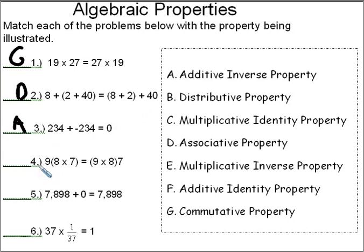For number 4, again, we're changing what's in parentheses. We're changing the grouping, and that is the associative property, which is letter D.